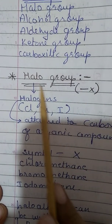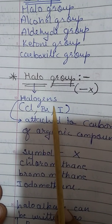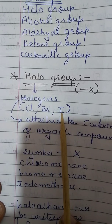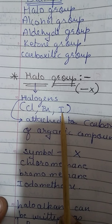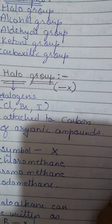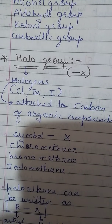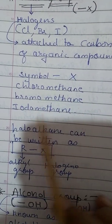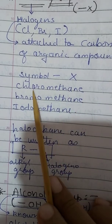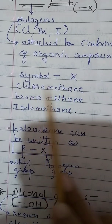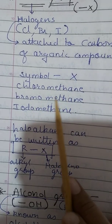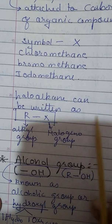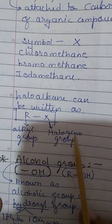First, the halo group, represented by a dash and X. Halo means halogen group — halogens are the elements of Group 7. So chlorine, bromine, and iodine are the three atoms which get attached to organic compounds, specifically to the carbon of the organic compound. The symbol is X. For example, chloromethane, bromomethane, and iodomethane. When one chlorine is attached to methane it is chloromethane, bromine gives bromomethane. Haloalkanes can be written as R–X, where R is an alkyl group and X is a halogen.